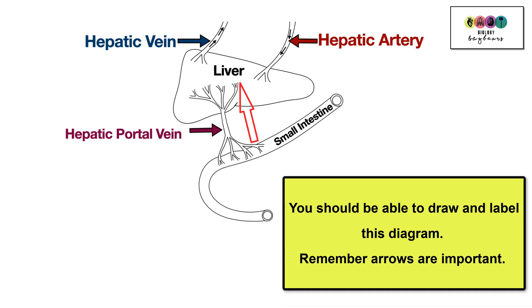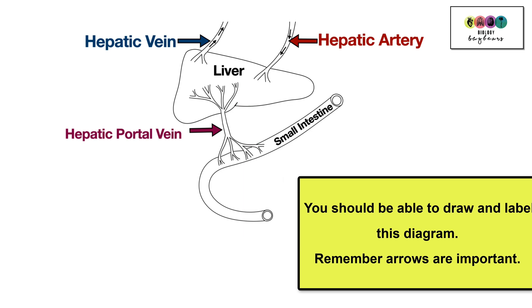You should also be able to draw and label the diagram, and remember the arrows are very important — you will lose marks if you do not include arrows to show the direction of blood flow.